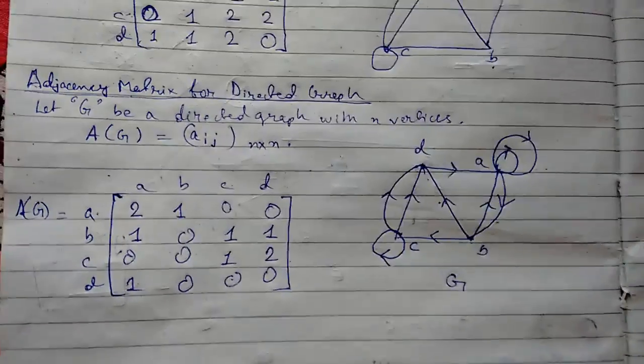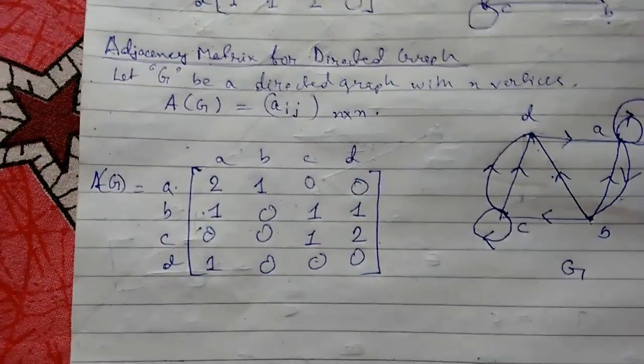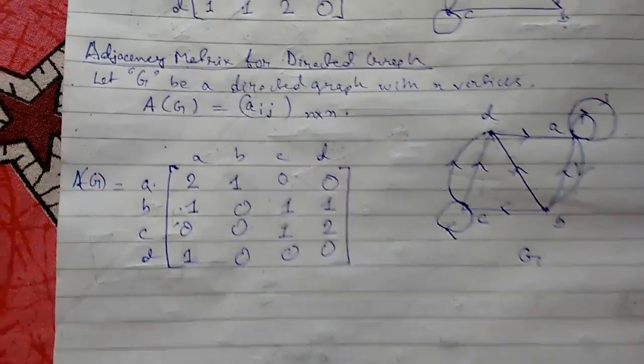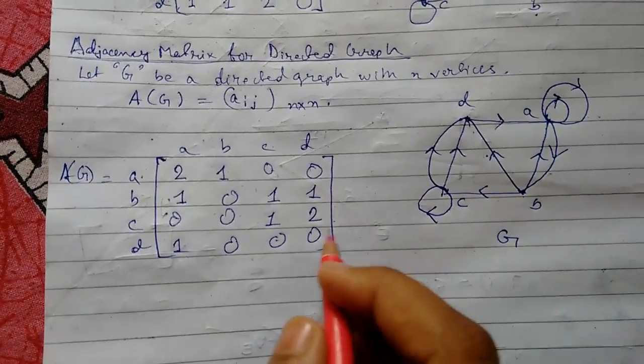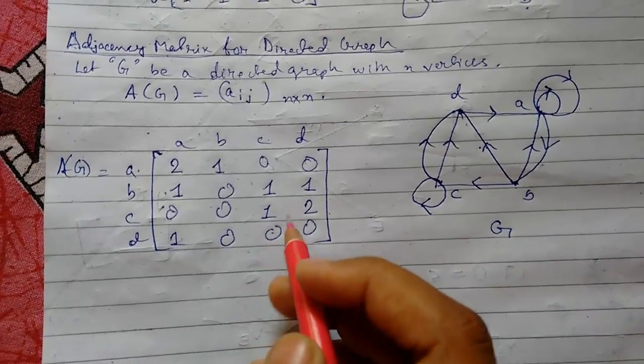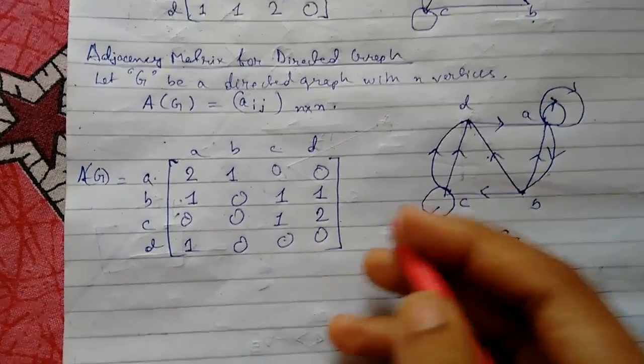Now we will look at some key points for this. The adjacency matrix for directed graph is in general a non-symmetric graph. So that is A(ij) is not equal to A(ji), but in some cases it may be symmetric.